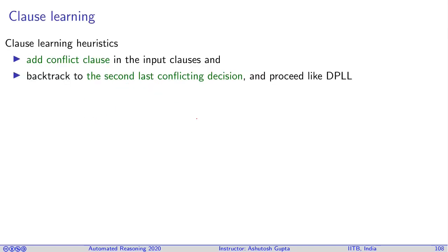So what is this conflict clause? What does it do? A few things you need to observe. We can add this conflict clause in the input clauses. So basically what you do, you have an implication graph, you construct this conflict clause and add it back to the input set. So after adding this conflict clause, what do you do? You backtrack to the last conflicting decision.